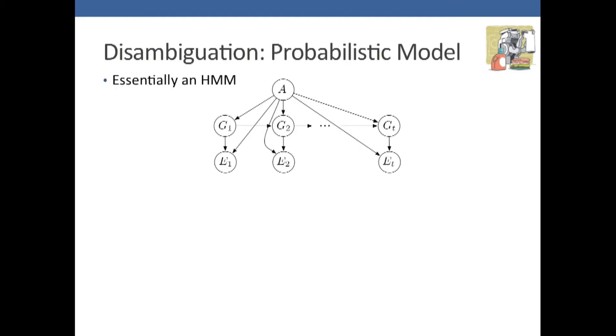For disambiguation, we use a probabilistic model, which is essentially an HMM. The hidden state consists of the article, which is the category and size - that does not change over time. And the left and right grasp points, which does change over time because we're working the cloth through some sequence of manipulations to figure out what it is.